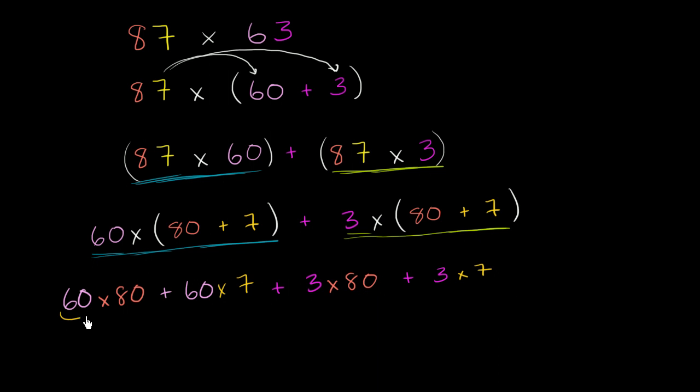So for example, this right over here, 6 times 8 is 48. But this isn't 6 eighths, this is 60 eighties, so this is going to be 4,800. We've got two zeros right over here. This right over here, 60 times 7 is 420. 6 times 7 is 42, but it's going to be 10 times as much because this is a 60.